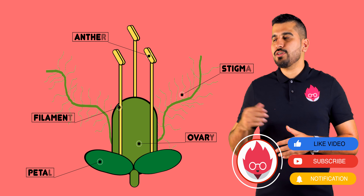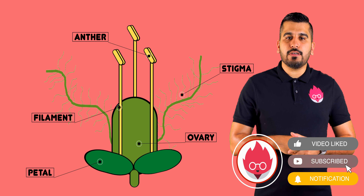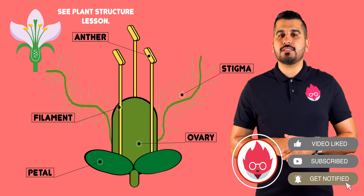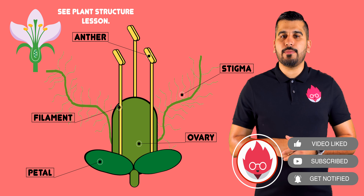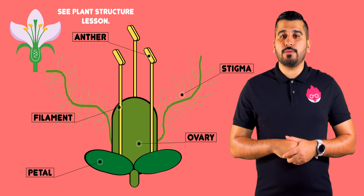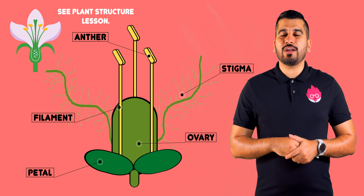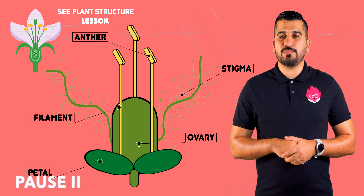If you look at this picture of a plant, it looks very different from the first diagram we looked at. What are the differences you can spot? You can pause the video while you write some down.